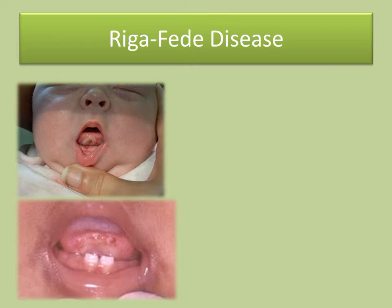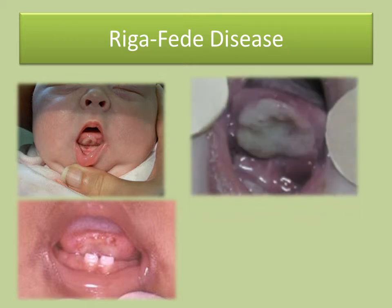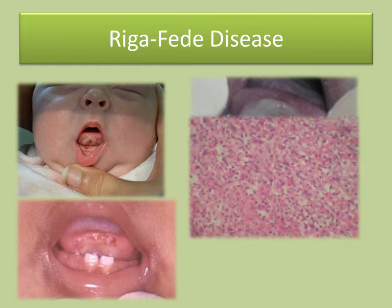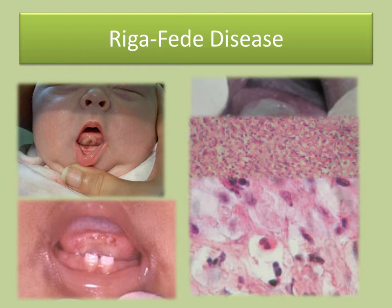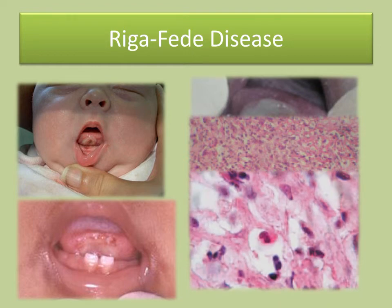Another set of photos from a case report shows a 3 cm deep ulceration on the anterior ventral tongue. The image shows eosinophil infiltration, and this is a high-power view of the eosinophils seen in the lesion.